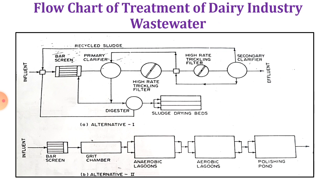The flowchart for treatment of distillery wastewater offers two alternatives. In the first alternative, influent passes through a bar screen, then a primary clarifier, then two-stage trickling filters, then a secondary clarifier where effluent is taken out; settled sludge is partly recirculated and partly sent through the primary clarifier to a digester and then sludge drying beds. In the second alternative, influent passes through a bar screen, grit chamber, anaerobic lagoons, aerobic lagoons, and then a polishing pond.